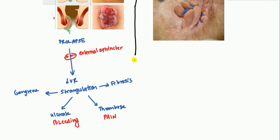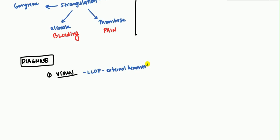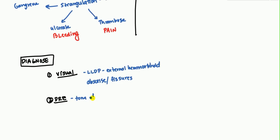So how do we diagnose it? First, you want to do a visual inspection by placing the patient in the lateral left decubitus position. If there's an external hemorrhoid, you can see it right away. However, you also want to rule out abscesses and fissures, as many patients come in saying they have a hemorrhoid when it may actually be a fissure or abscess. After visual inspection, proceed to a digital rectal exam, where you check for the tone of the anal canal and any tenderness. Note that internal hemorrhoids are often not palpable.